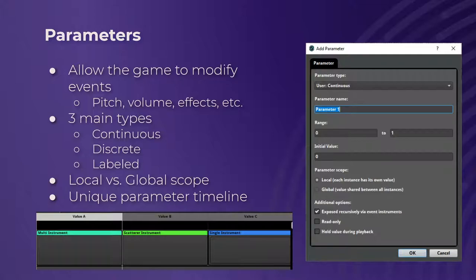There are two different types of scope a parameter can have: local or global. Local means each instance has its own value — so if you play two footstep sounds at the same time, both can have different parameter values. If they're global, they all share one value. Global is pretty much necessary to automate things on the mixer. One last really cool thing: parameters can be used to open up a new timeline as well. I've found this really useful for footstep sounds — you can set things to play only when the parameter is set to that value.